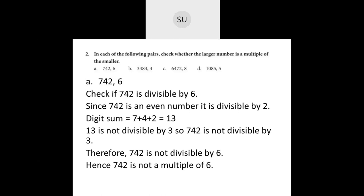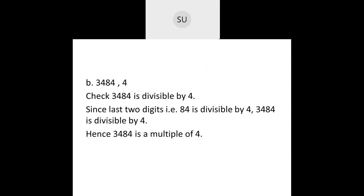Now the second question: 3,484. We check if it is divisible by 8. The divisibility rule for 8 says that if the tens and ones digits taken together are divisible by 8, then the number is divisible by 8. Here for 3,484, the tens and ones digits form 84. 84 is divisible by 4 — wait, so 3,484 will be divisible by 4. Since the number is divisible by 4, it is a multiple of 4. So 3,484 is a multiple of 4. That was question 2, A and B.